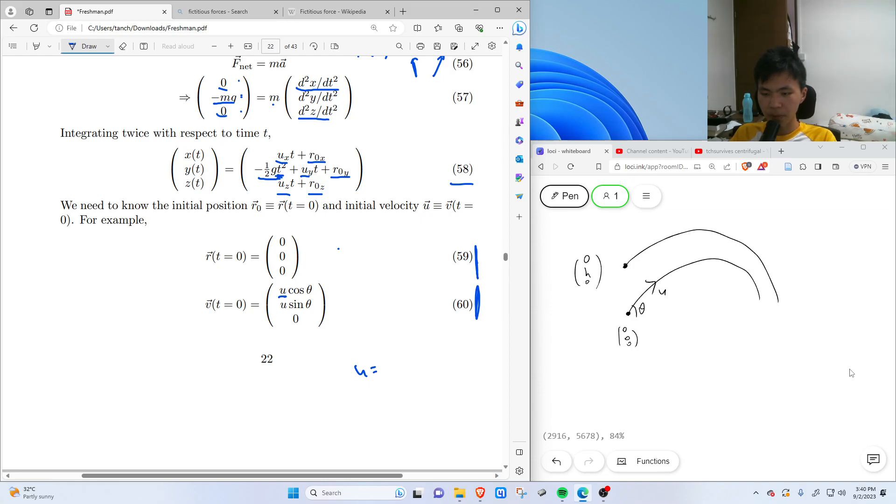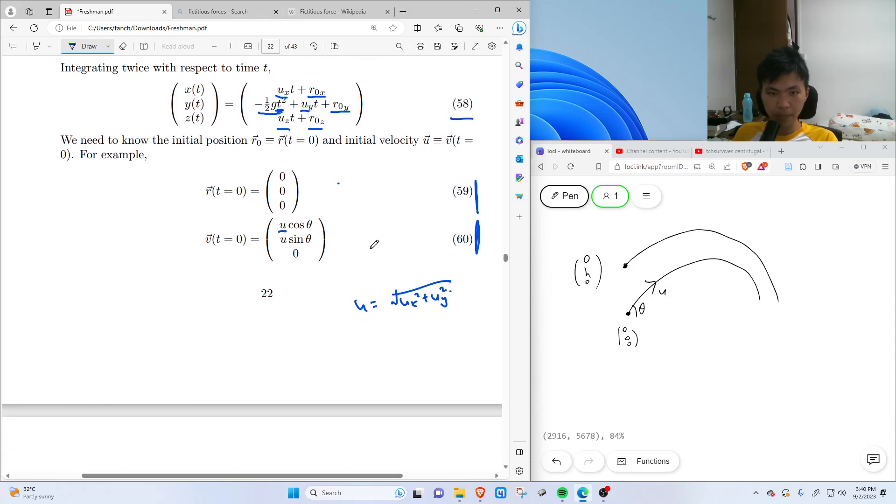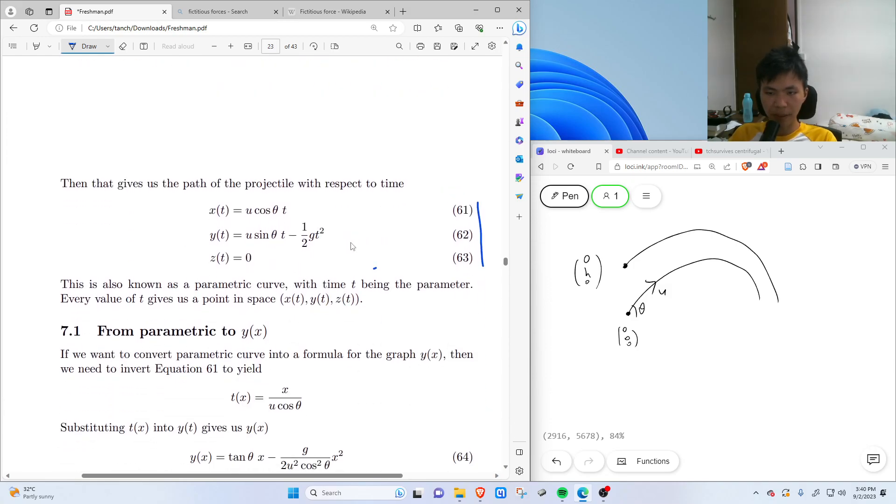U is the magnitude of the velocity, so U equals square root of UX squared plus UY squared, the length of the vector. Remember that velocity is a vector. So substituting these in, we get this. You may be more familiar with this, perhaps you have derived this in your class, your school or something.